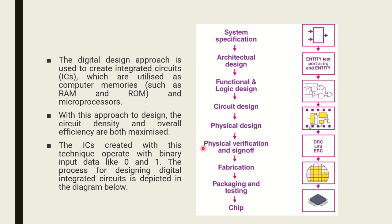ICs are categorized based on type: digital integrated circuit, mixer integrator circuit, and analog integrator circuit. Here we are going to see only about digital integrated circuits. Digital IC chips work only at a few specifically defined levels instead of working on all signal amplitude levels. Digital integrated circuits are specially designed using several digital logic flip-flops, multiplexer gates, and other electrical circuit elements. The logic gates operate with digital and binary input data like 0 and 1. Digital ICs are widely used in microprocessors, computer networks, frequency counters, and digital signal processors.